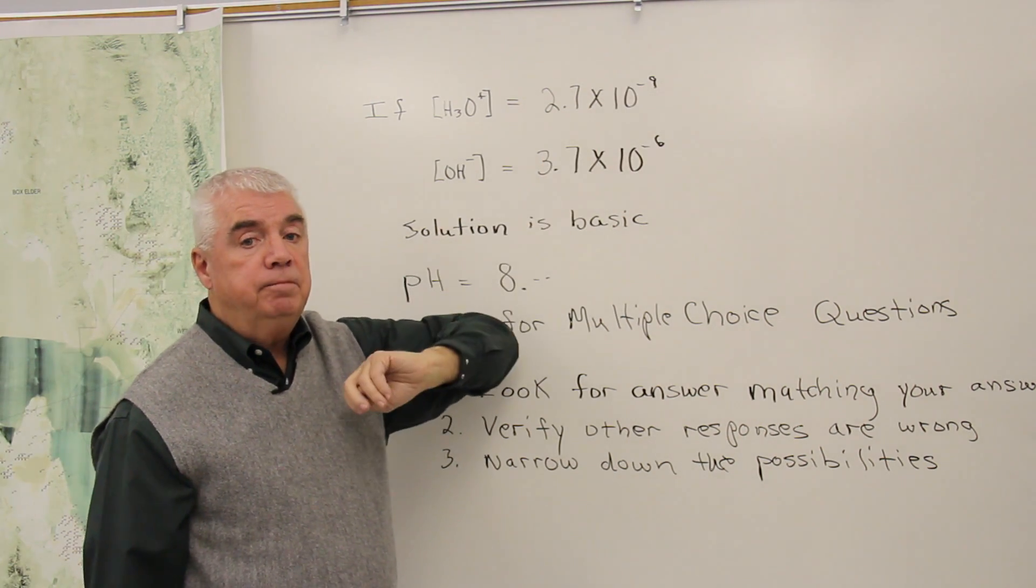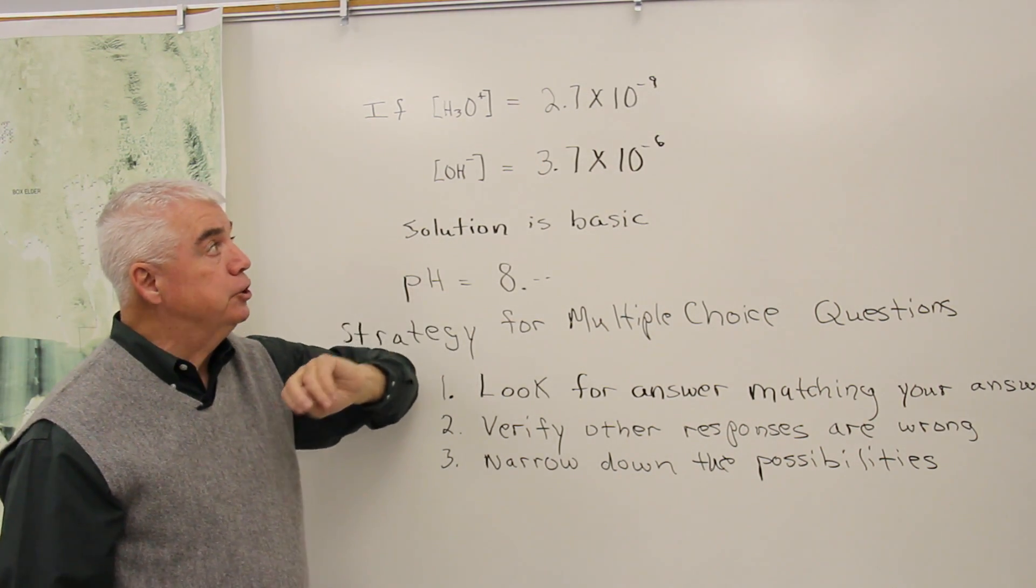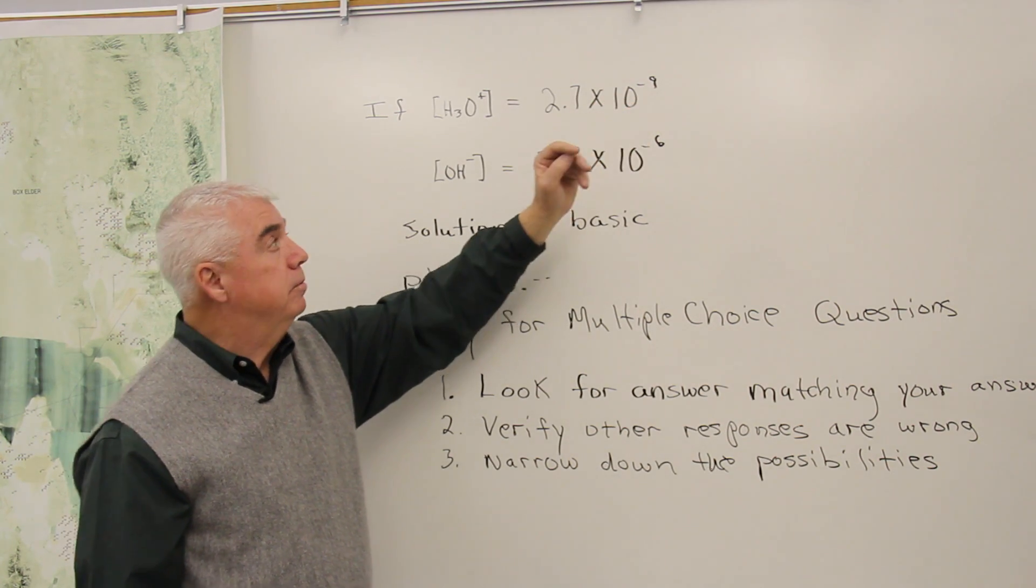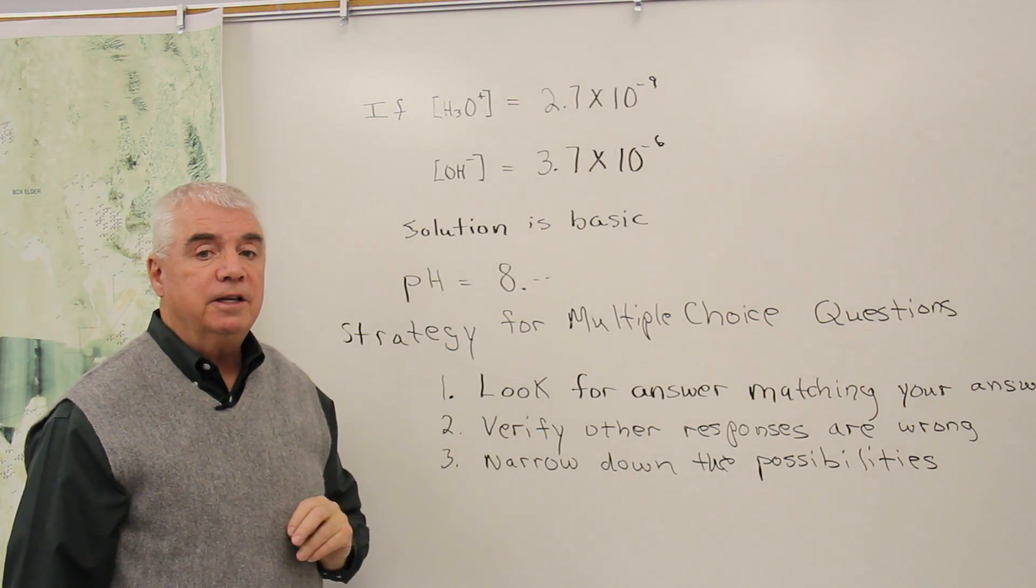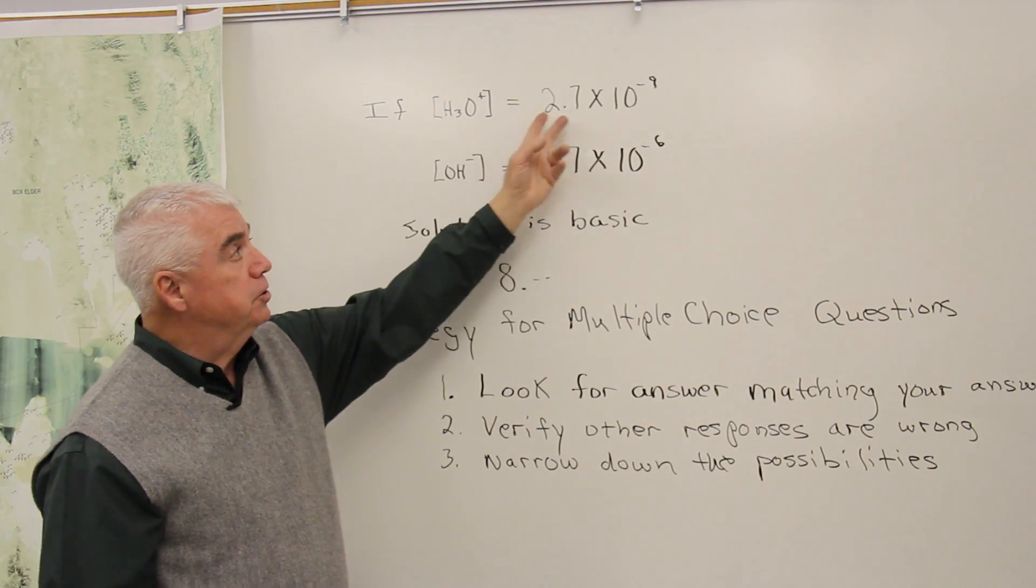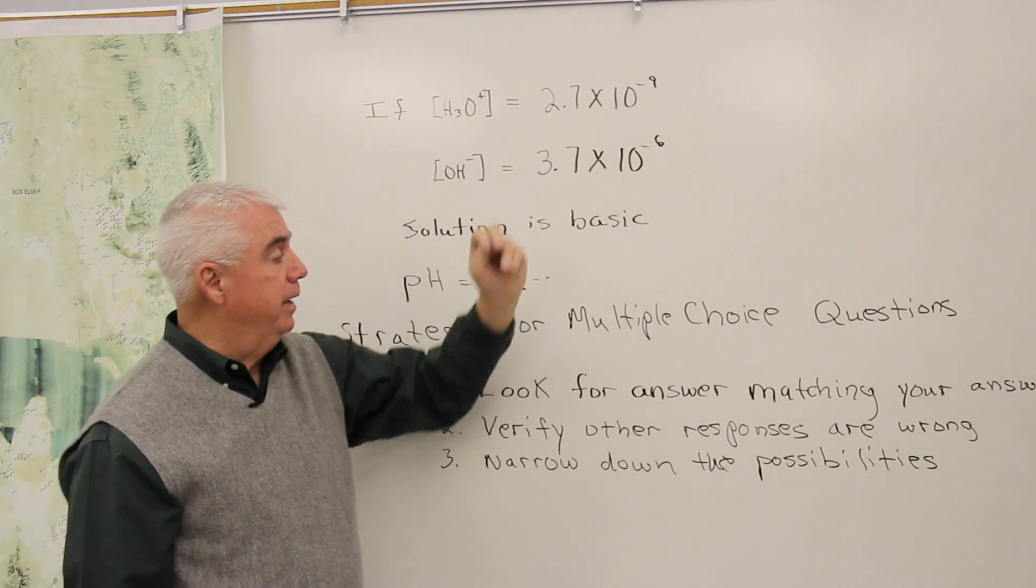10 to the minus 9. I know that the pH is going to be close to 9. And this, the 2.7 part, is going to have a negative logarithm, which is going to reduce that 9 a little bit.